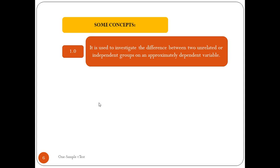The independent samples t-test is used to investigate the difference between two unrelated or independent groups on one or more dependent variables. This test is designed to verify whether there is a statistically significant difference between two groups that are independent from each other on one or multiple dependent variables.